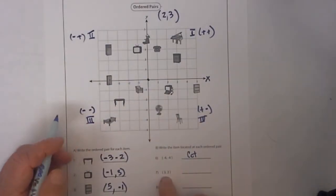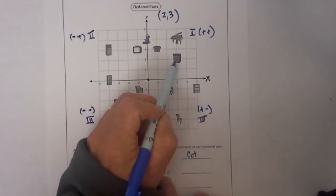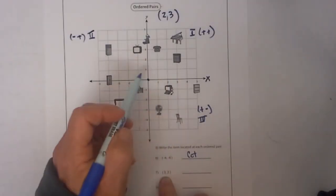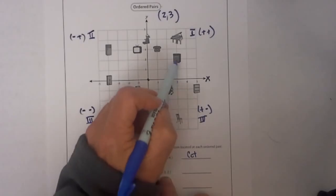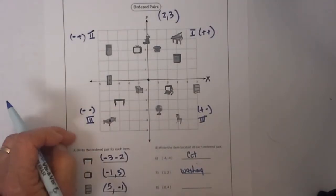Next let's go 3, 2. Remember the first number is the x, 3 up 2 and let's see over 3 up 2 and that is a washing machine. Doesn't really look like a washing machine but that is what it is.